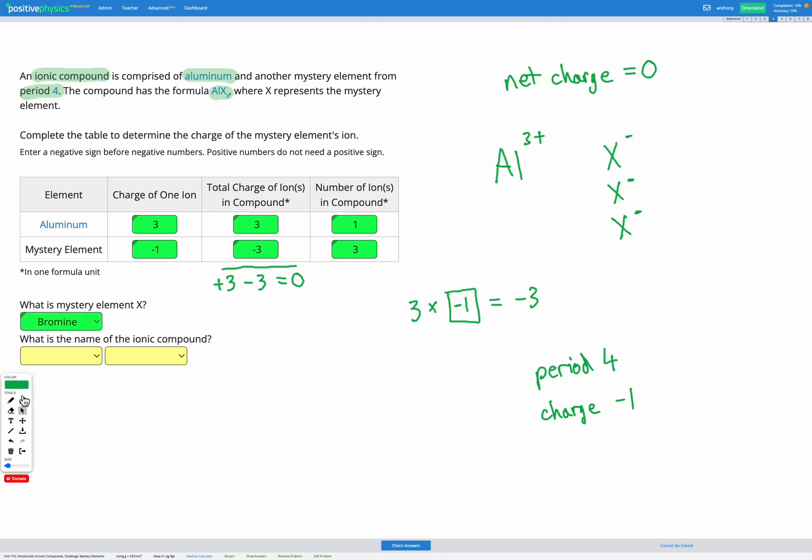Okay. Final step finding the name of our ionic compound. We have the name of our metal first. Aluminium is the metal in this compound. So aluminium. Then we have the name of our non-metal, which is bromine. But we have to add the ide ending instead of whatever ending it has right now, which is ene. So bromide.